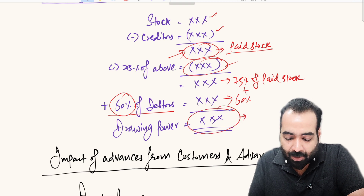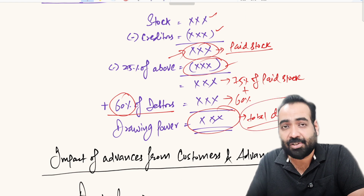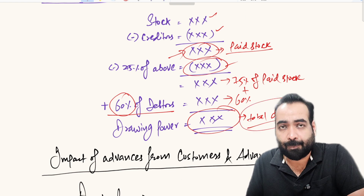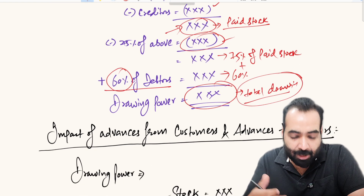This 60 percent of debtors plus the 75 percent of paid stock together give you your total drawing power. If margins are different on different items, the formula changes accordingly.